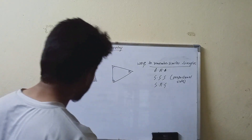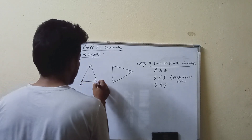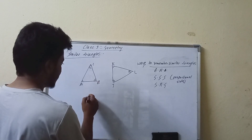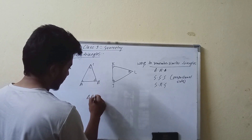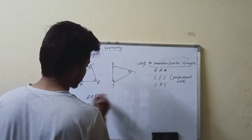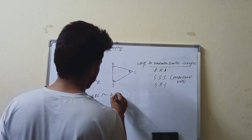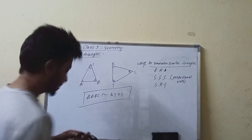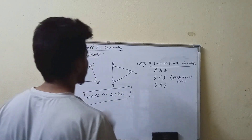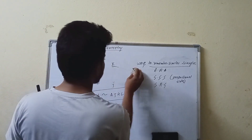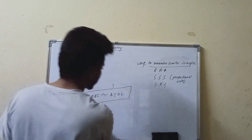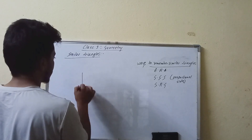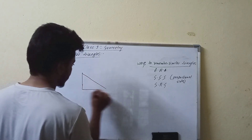So we call the vertices A, B, C and J, K, L. Triangle ABC is similar to triangle JKL. This is what we mean when two triangles are similar.